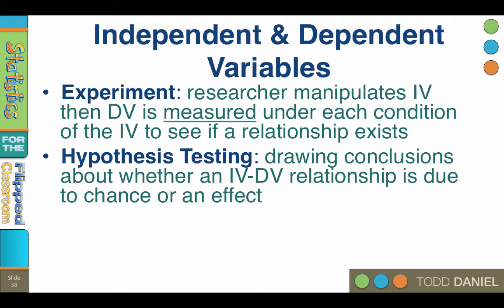We begin an experiment by guessing at the outcome of the dependent variable. It is kind of like betting on a horse race — you place your bet first and then you watch what happens. In science, the win, place, or show is your hypothesis, and what we are doing is called hypothesis testing. Hypothesis testing involves drawing conclusions or inferences about whether the relationship between the independent variable and the dependent variable is more likely due to random chance or due to a true effect.